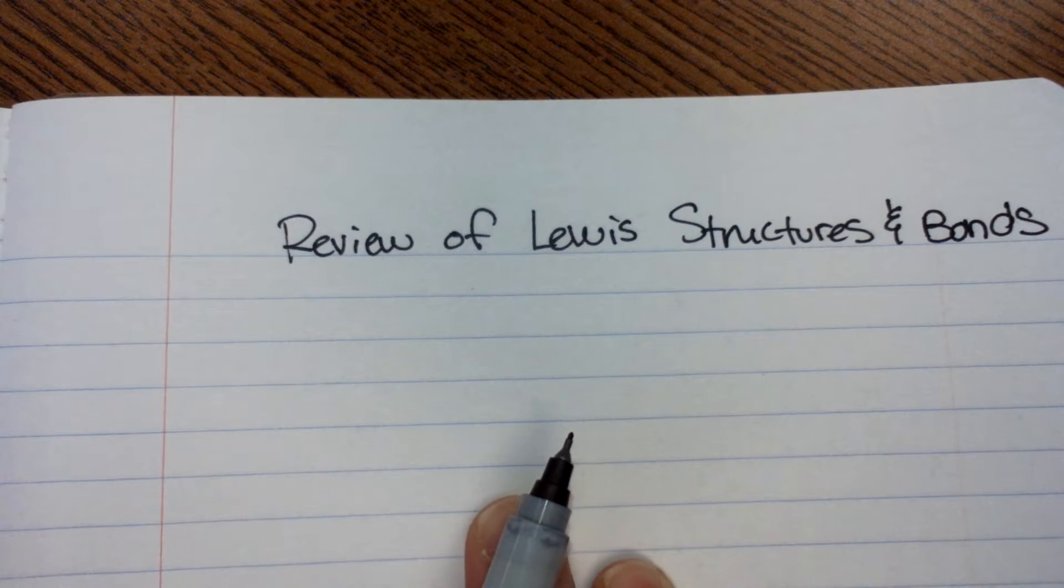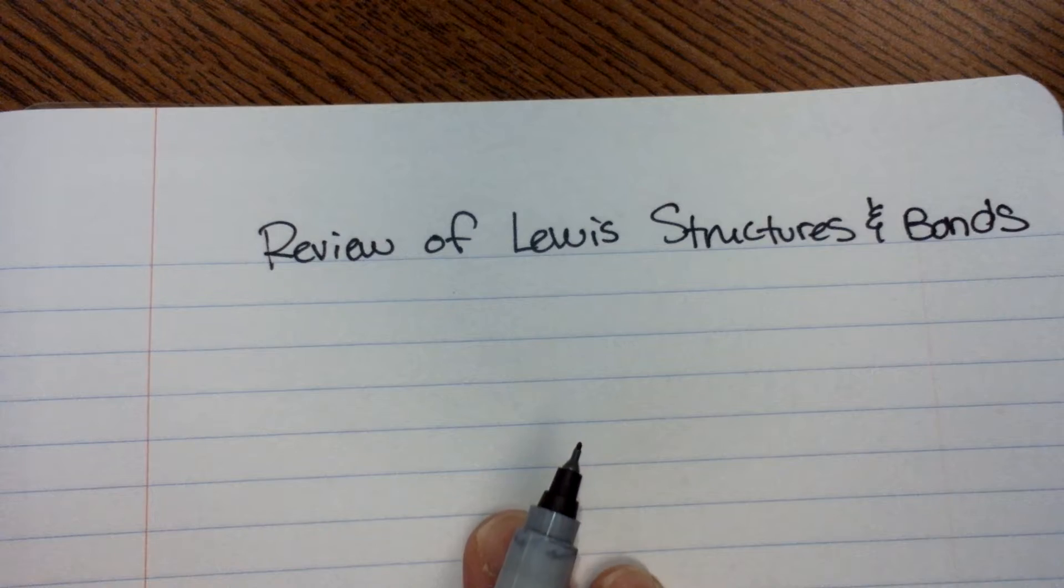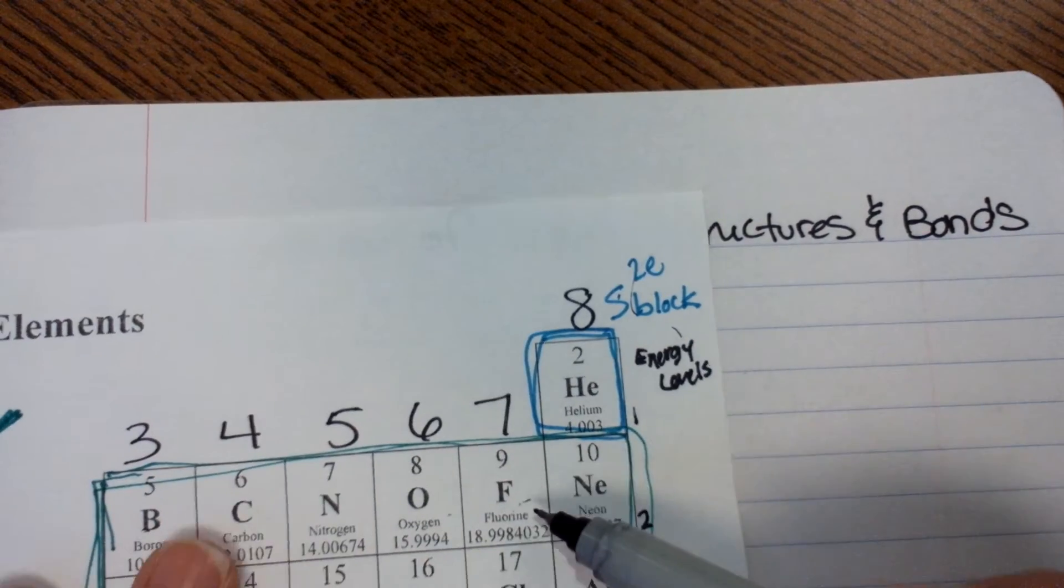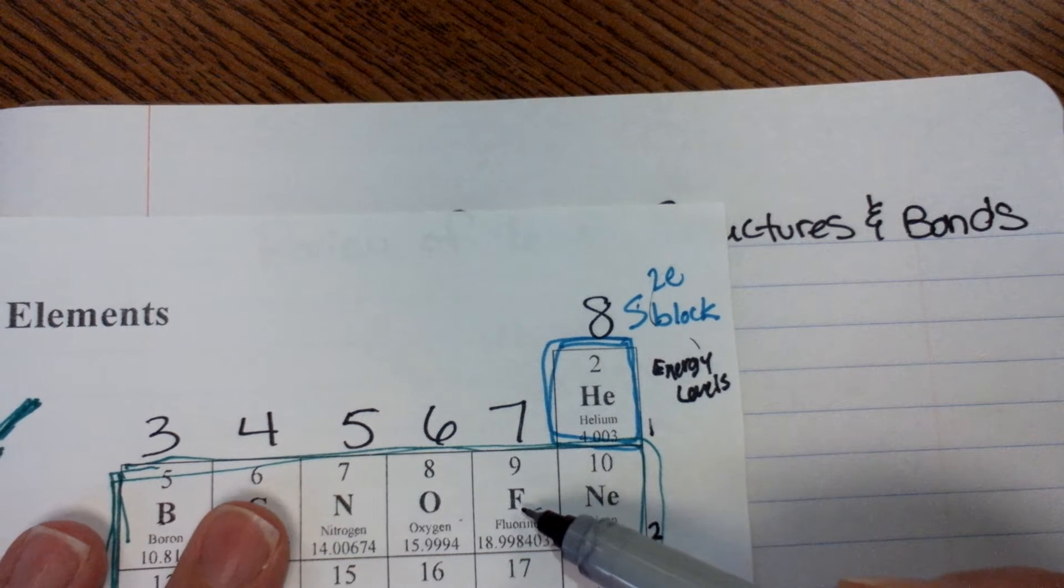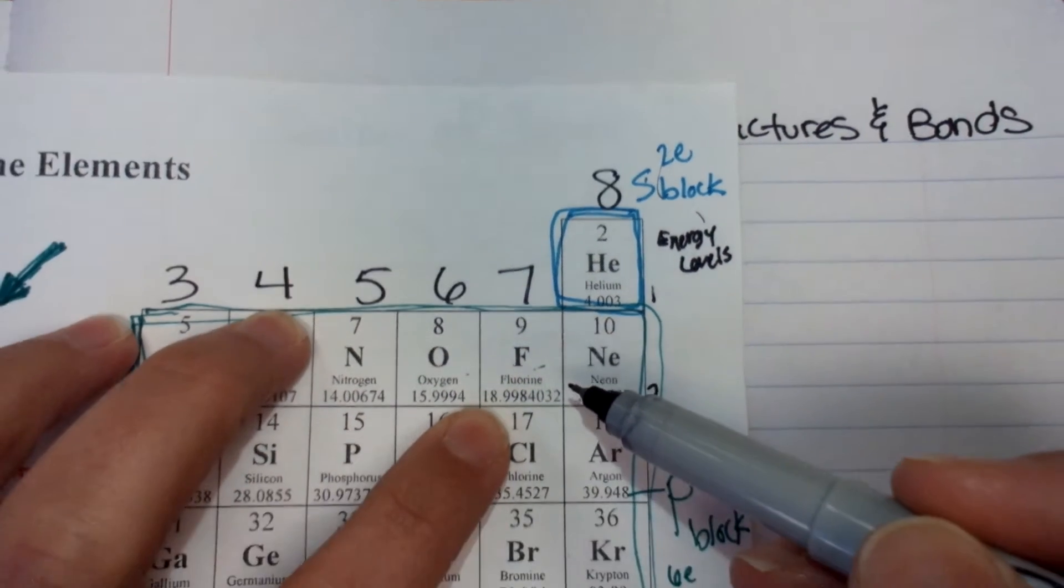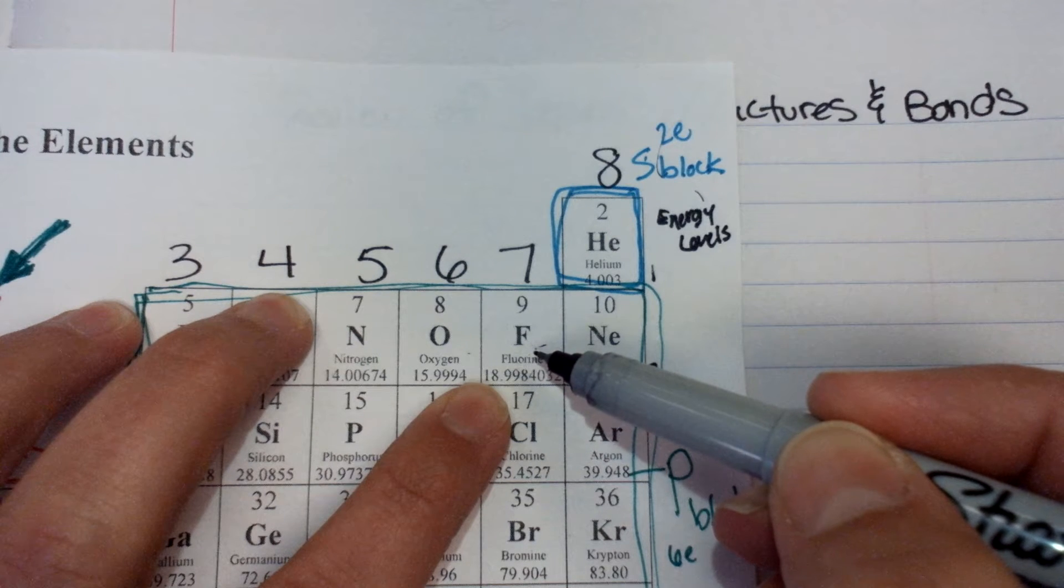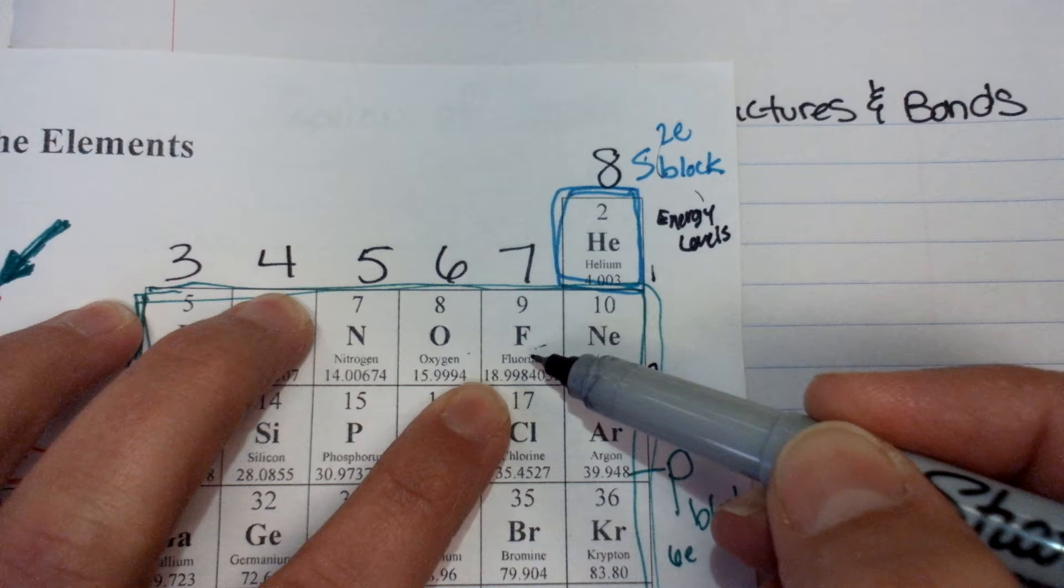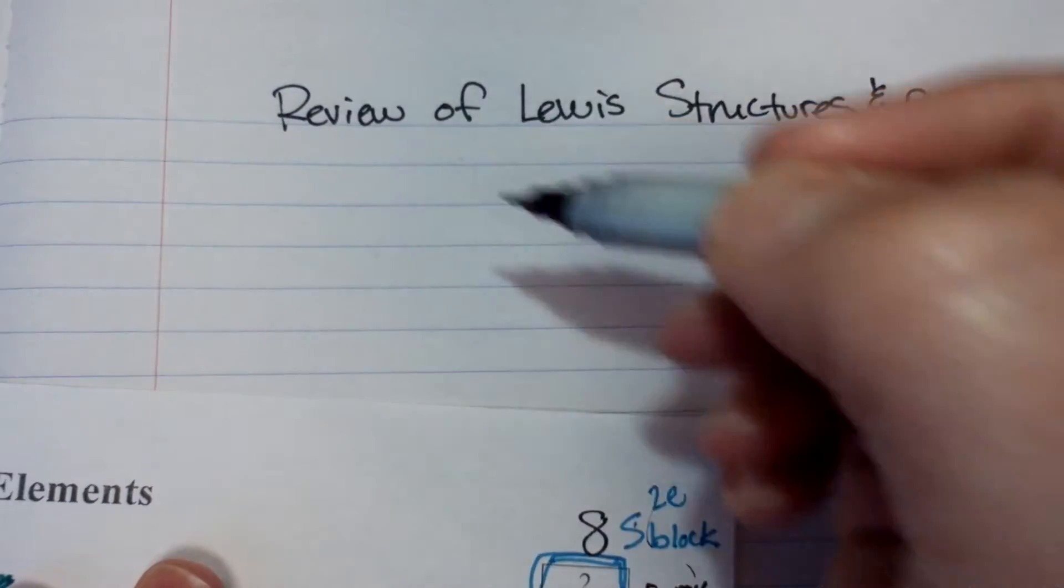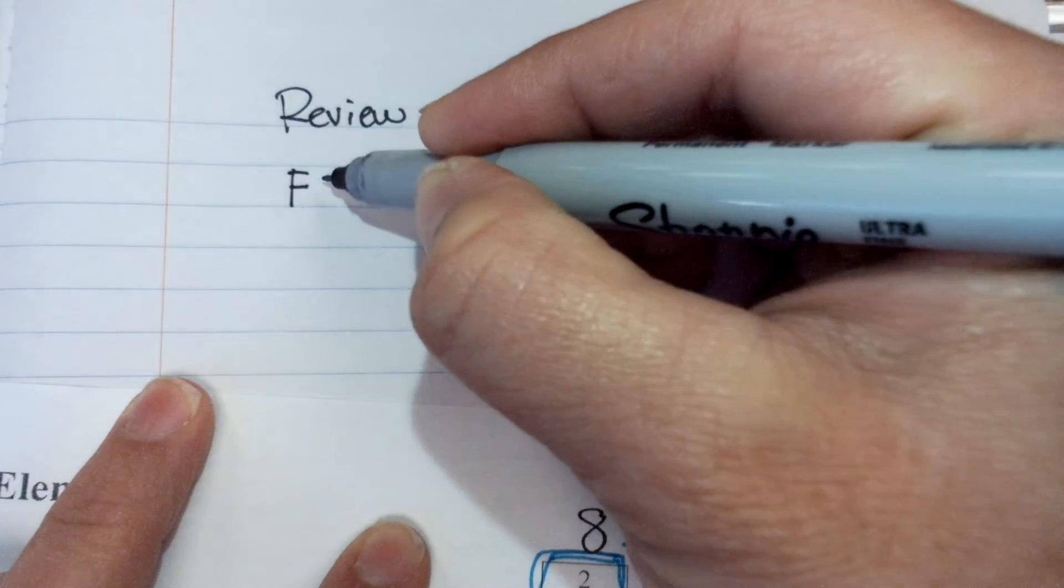All right, so the first thing about Lewis structures is that we need to think about our element and find out how many valence electrons we're going to have. If we look at fluorine, let's just start with fluorine, the most electronegative, so it's going to pull in the most electrons of anybody else. How many valence electrons does fluorine have?